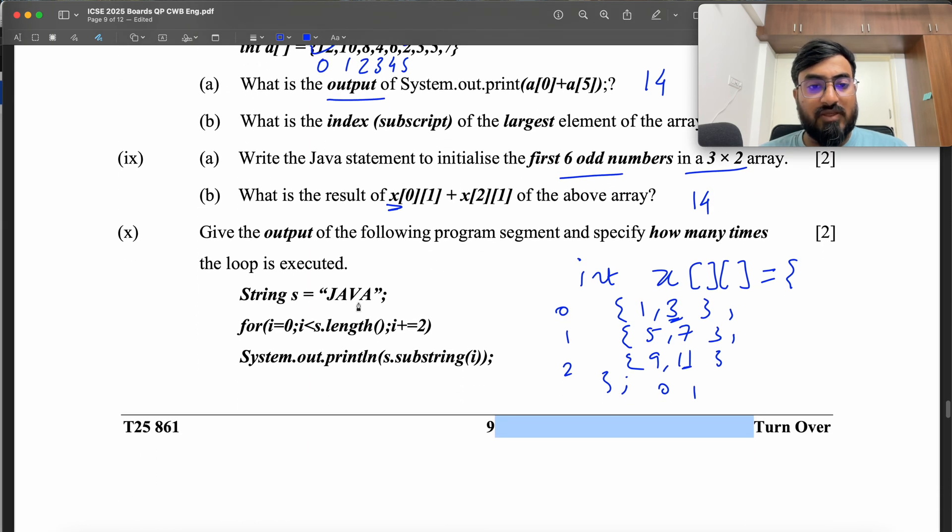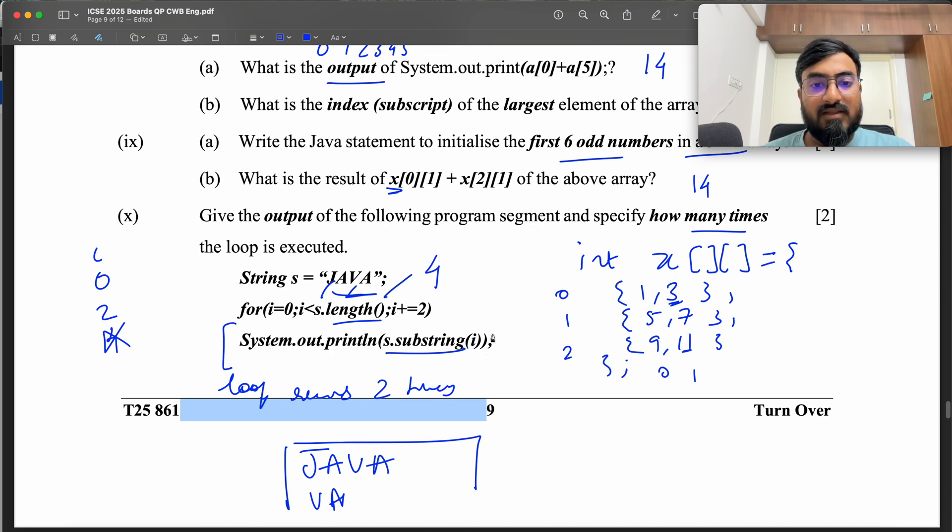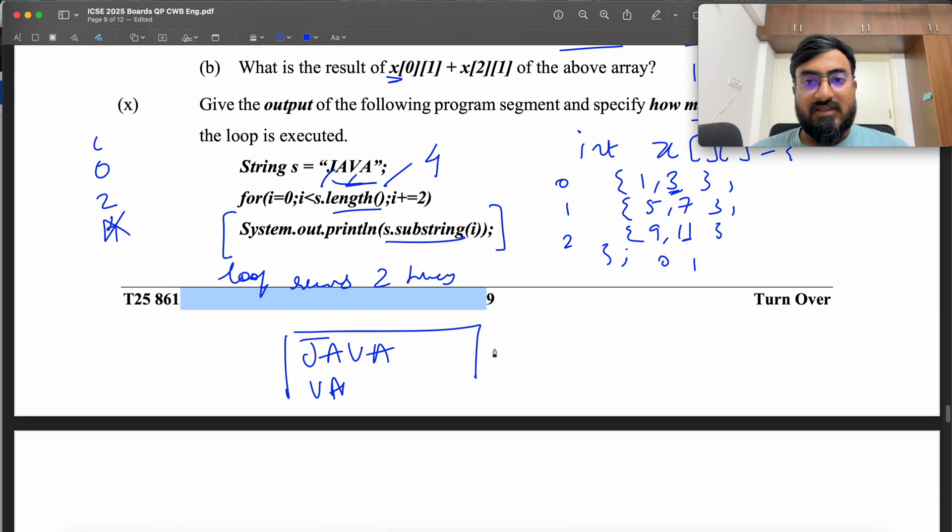Give the output of the following program. How many times the loop is executed? i is 0, then 2. i cannot be 4 because 4 less than 4 will be false. So i is 0 and 2. So loop runs twice. Output is going to be s.substring(i). So s.substring(0), the first output is going to be the entire java. And then 2. So 0, 1, 2. Next output is going to be v and a. Because this is a single line under this for loop, so this is going to be the body of the for. So this is the answer.